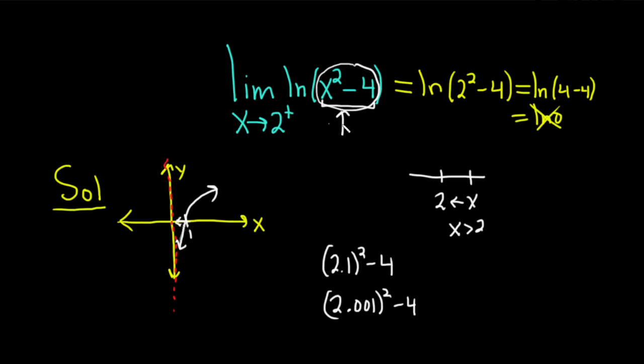the smaller the argument becomes, the smaller the y values become. This limit is going to be equal to negative infinity. As x approaches 2 from the right, x squared minus 4 approaches 0 from the right. And so the natural log of something approaching 0 from the right is going to approach negative infinity.